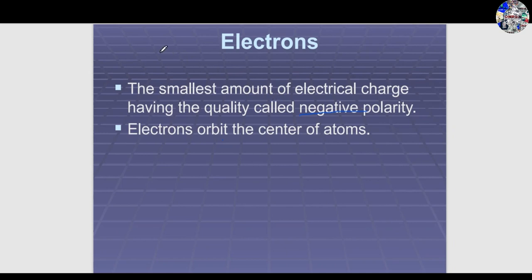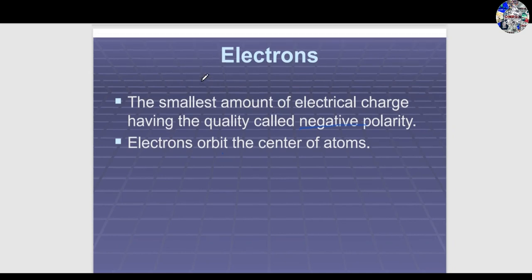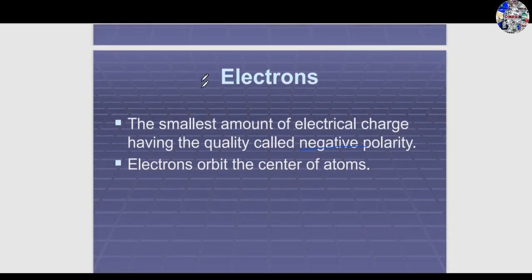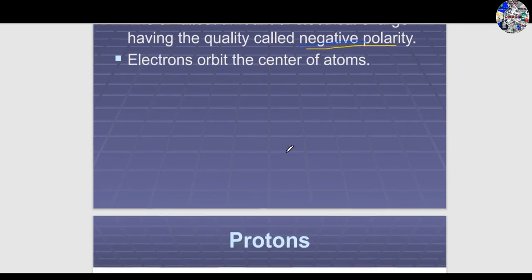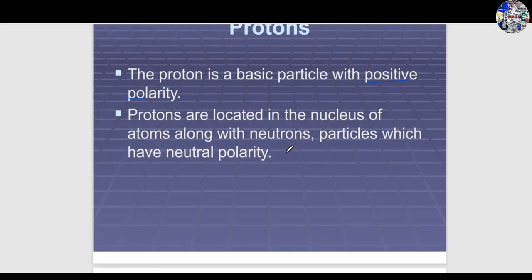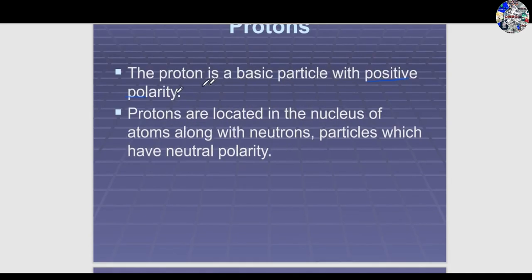The negative charge is called electrons — the smallest amount of electrical charge, having the quality called negative polarity. Electrons orbit the center of atoms. Protons are basic particles with positive polarity, located in the nucleus of atoms along with neutrons. Neutrons are nucleus particles with neutral polarity.